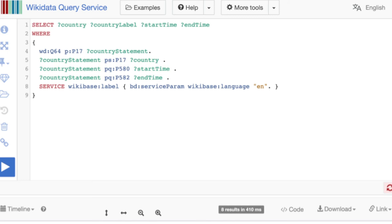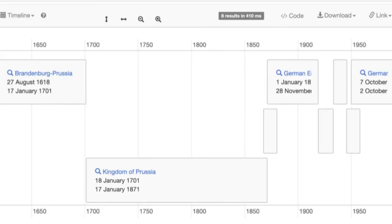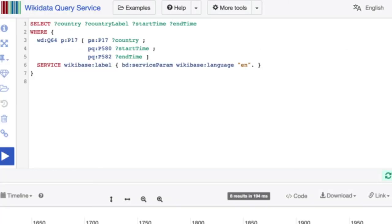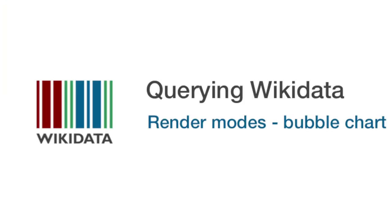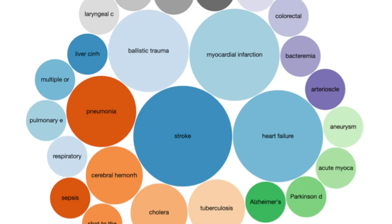By querying this time-based information, the query service notices it can render this as a timeline. Now we have an interactive timeline of which countries the city of Berlin belonged to over the ages. There's an abbreviated version of writing this, but this is just for reference. There are other interesting visualization modes, such as the bubble chart. The Wikidata query service has a lot of examples — one is causes of death for American presidents, where 'ballistic trauma' is a nice way of saying the person was shot.